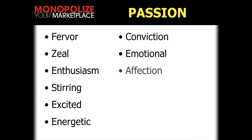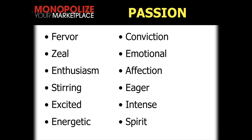Let's move on and talk about passion. Here's a list of evaluation words: fervor, zeal, enthusiasm, stirring, excited, energetic, conviction, emotional, affection, eager, intense, spirit. When you write something, ask yourself: does it have enthusiasm? Is there conviction? Is there emotion? I'm going to let you write those down while I grab something that's going to make my point. I got this brochure from Kathy at training yesterday — it's been MYM live training this whole week — and it's a brochure for a remodeling company.